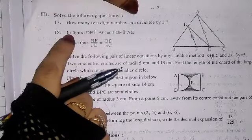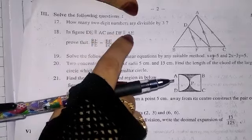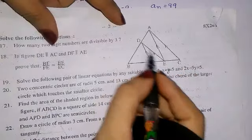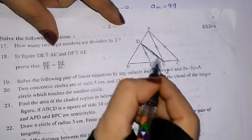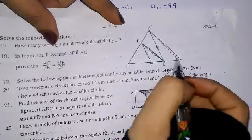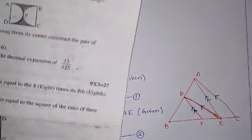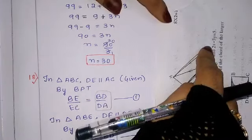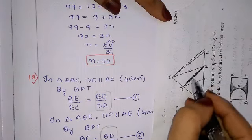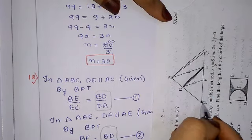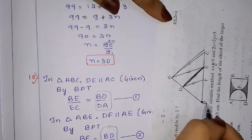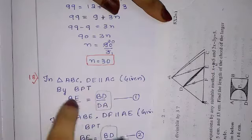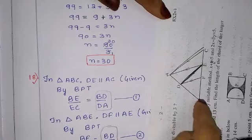Question number 18: in the figure DE is parallel to AC and DF is parallel to AE. Prove that BF/FE = BE/EC. We focus on triangle ABC where DE is parallel to AC. By the Basic Proportionality Theorem (BPT), BD/DA = BE/EC — this is equation 1.